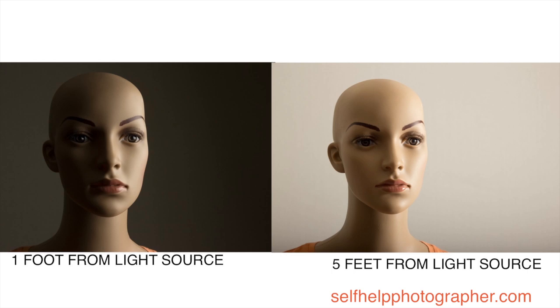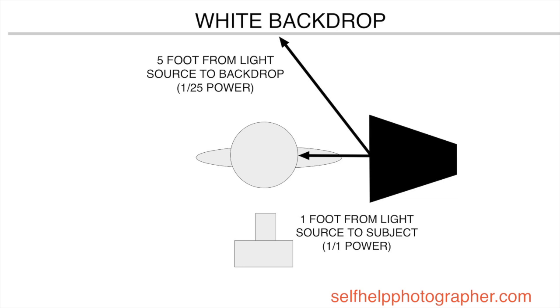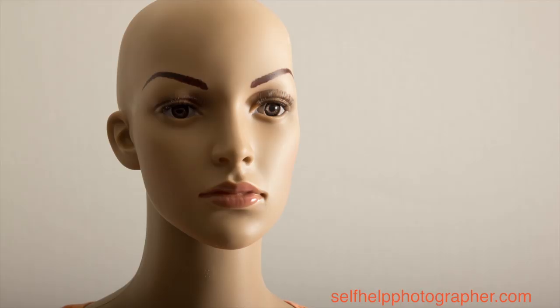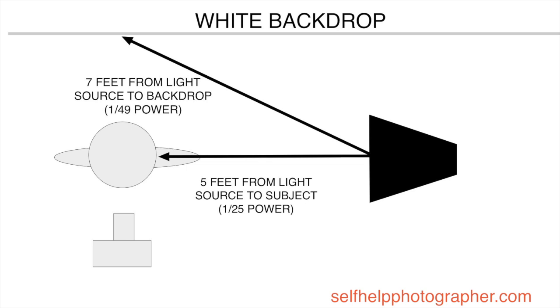The backdrop is also much lighter than in the first shot. In both shots the backdrop is about five feet from Lisa, but in the first shot the backdrop is also five feet from the light while Lisa is one foot from the light — resulting in an almost five stop reduction in power hitting the backdrop compared to Lisa. In the second shot, the backdrop is about seven feet from the light and Lisa is five feet away. Seven times seven is 49, so the backdrop is at one forty-ninth power. From one twenty-fifth to one forty-ninth is about one stop, making the backdrop three and a half stops brighter than in the first shot.